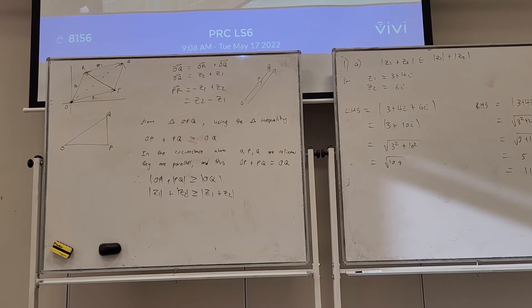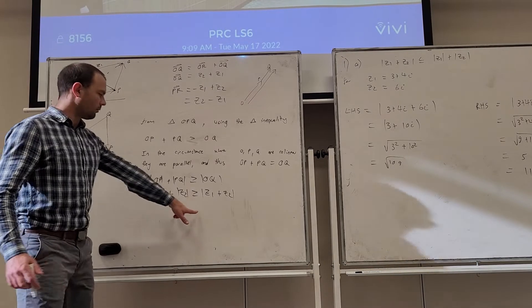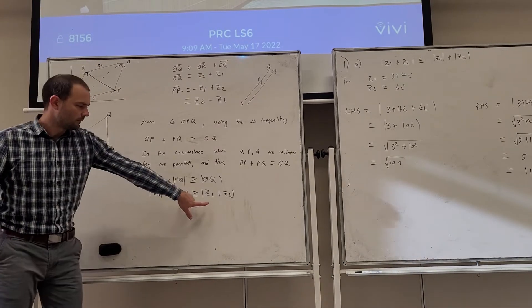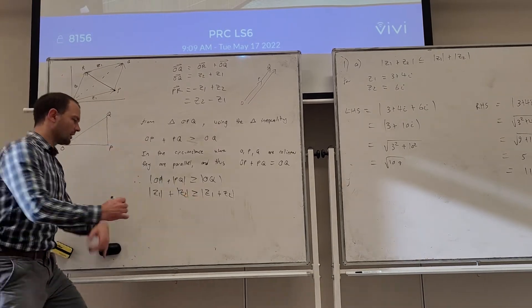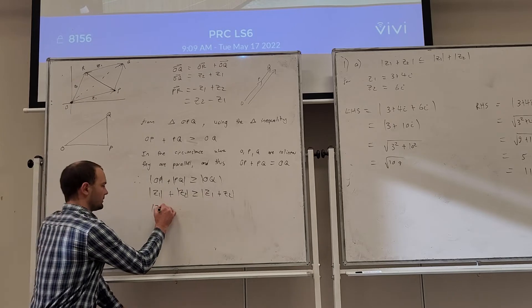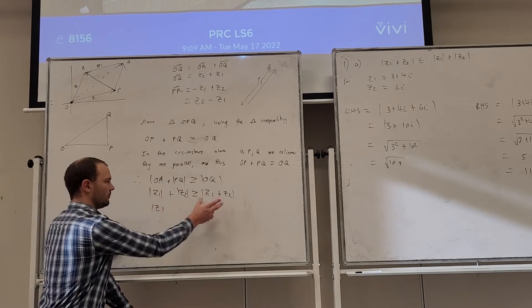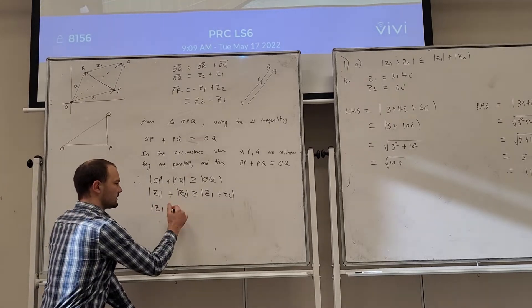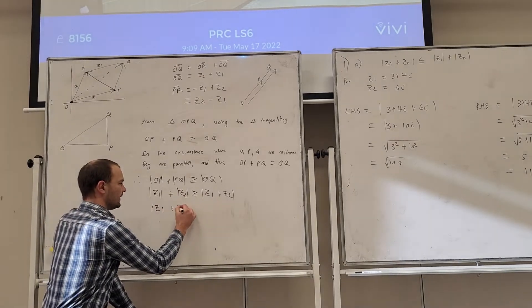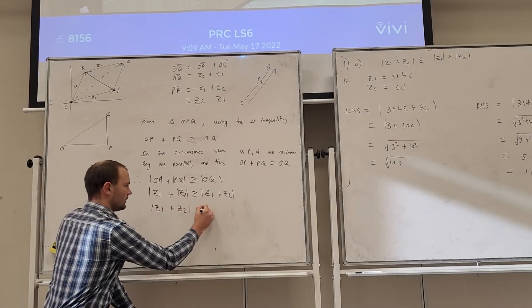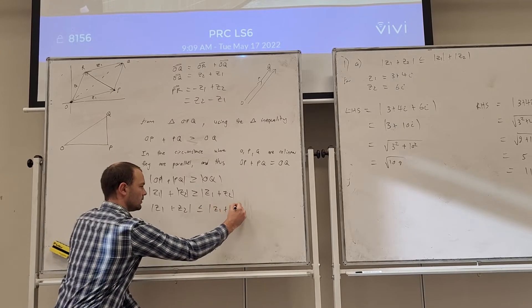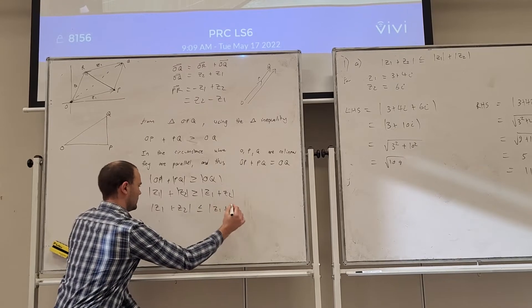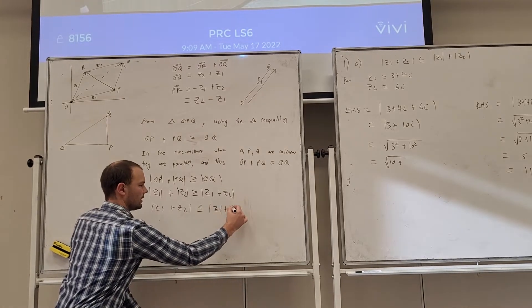The inequality is written the other way in the question, but we can just flip it around: |Z1 + Z2| ≤ |Z1| + |Z2|.